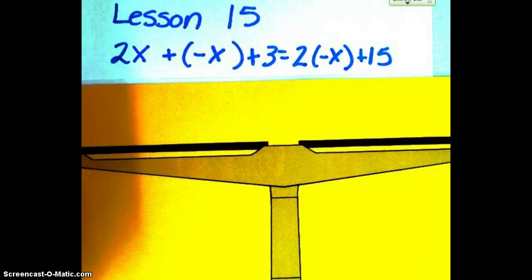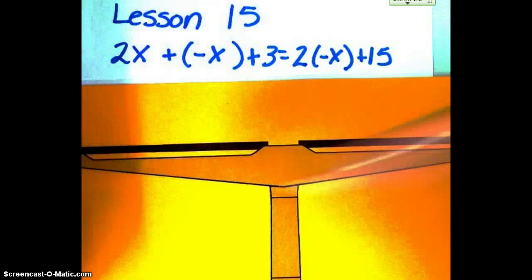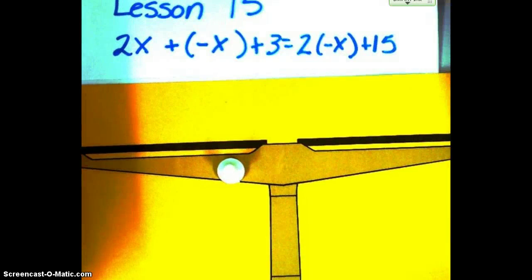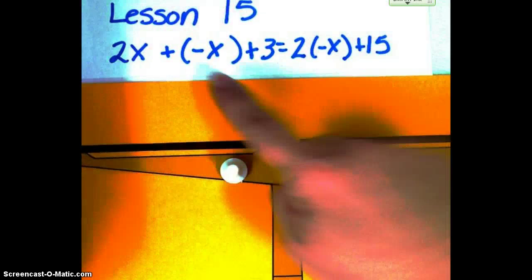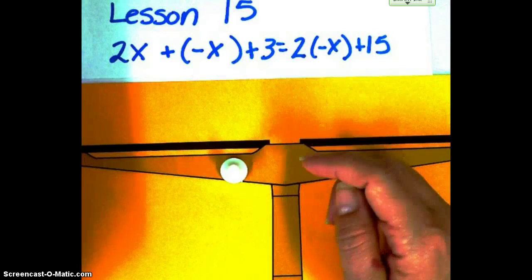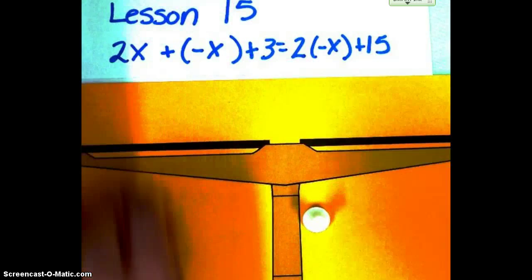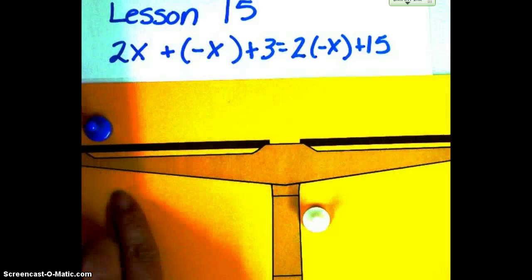Okay, fifth graders, so today our white pawn that we've been calling star, we're going to replace it with a new name. It's now going to be called a negative x. So we'll start out with an equation like this. This is Lesson 15, by the way.